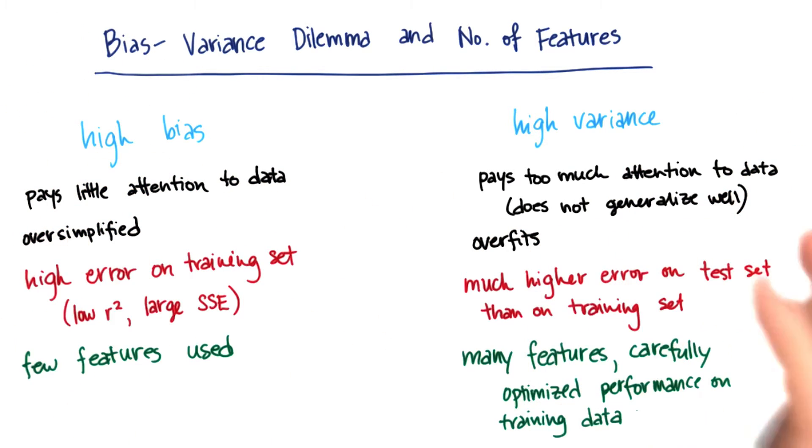Another way to frame this whole discussion about the number of features that you should be using can be phrased in terms of the bias-variance dilemma, or how many features should you be using so that you're balancing these two concerns.